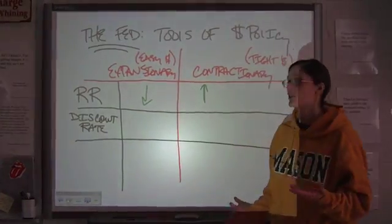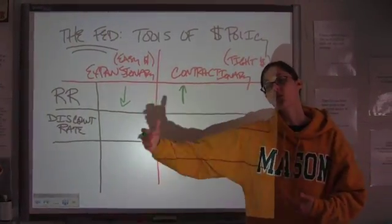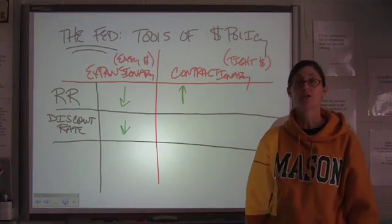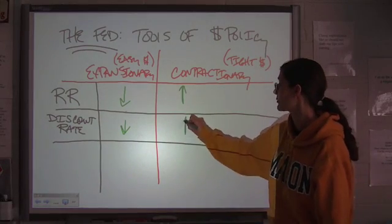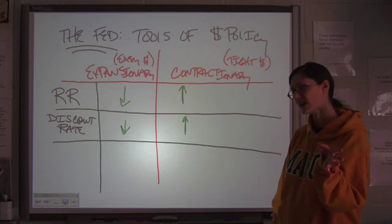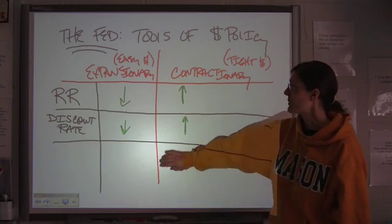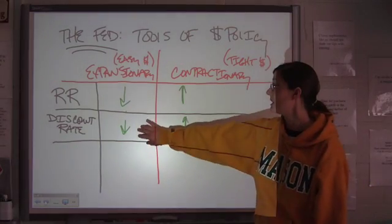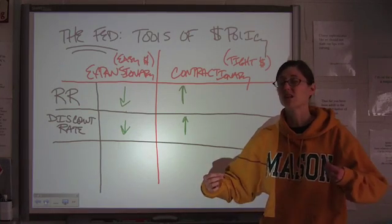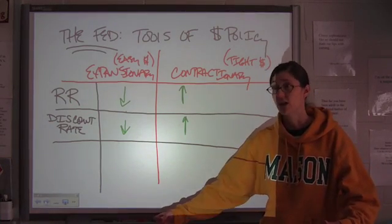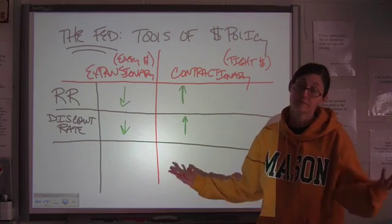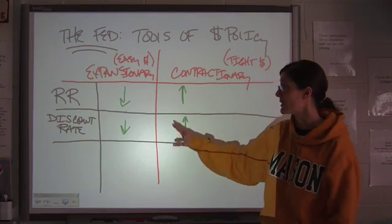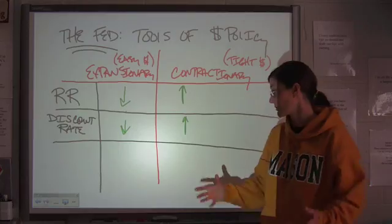If they want the banks to borrow more money — making more available in the economy — they will lower the discount rate. And if they want to discourage banks from borrowing money, they will raise it. Now, why is this not so effective? Just because they lower the rate doesn't mean that banks are going to borrow the money. They've given them the incentive, but that doesn't mean the banks have to respond to it. So it's not guaranteed, and this is not the one they use most often.